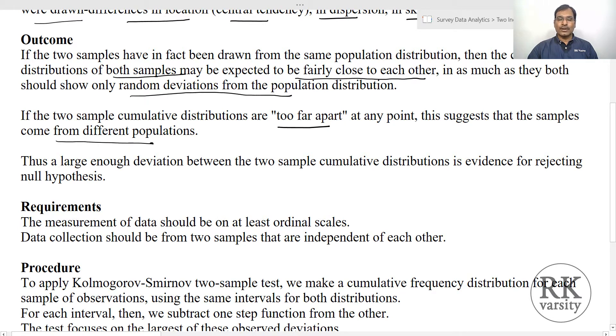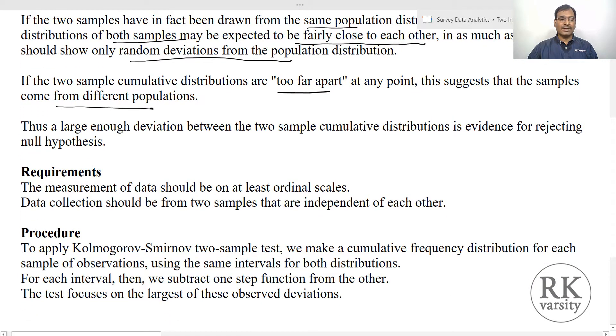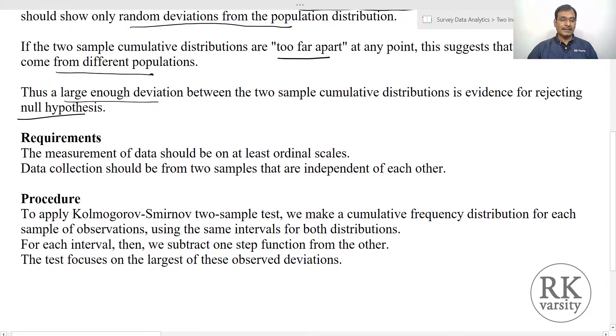If the distributions are fairly close to each other, then we can say they are drawn from the same population. If they are too far, then they are from different populations. Thus, large enough deviations between the two sample cumulative distributions is evidence for rejecting the null hypothesis. If there is a large deviation, we reject the null hypothesis. If deviations are very small, we accept the null hypothesis.